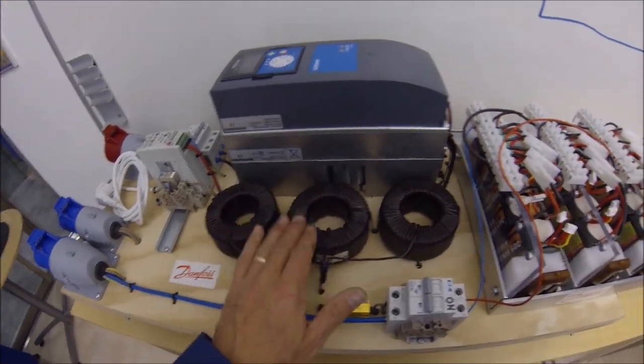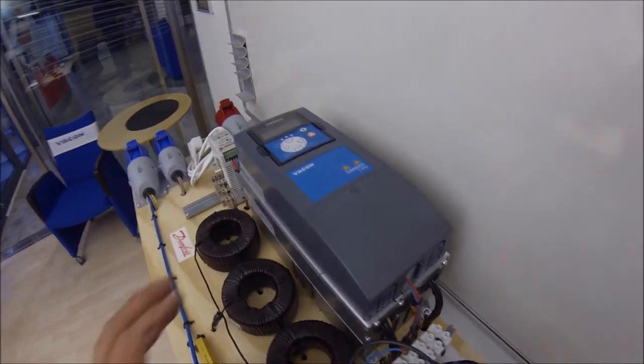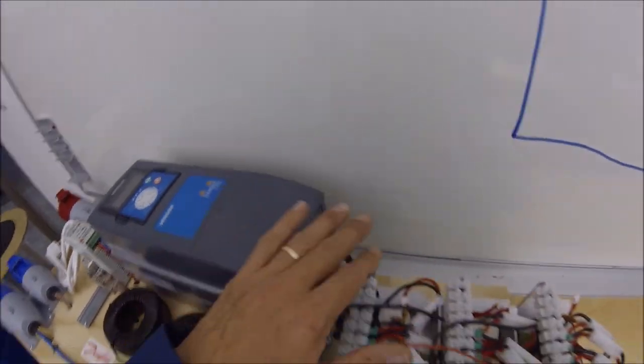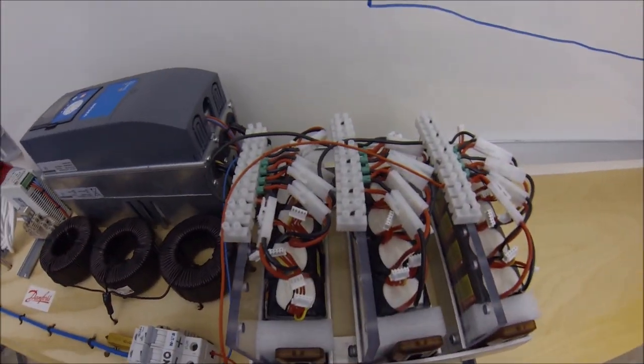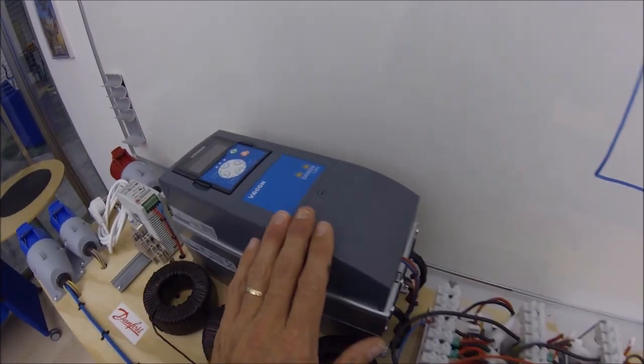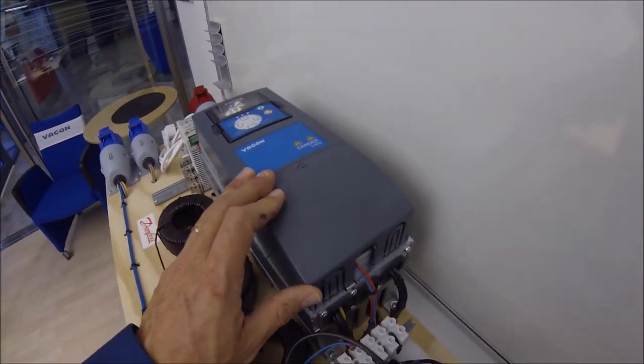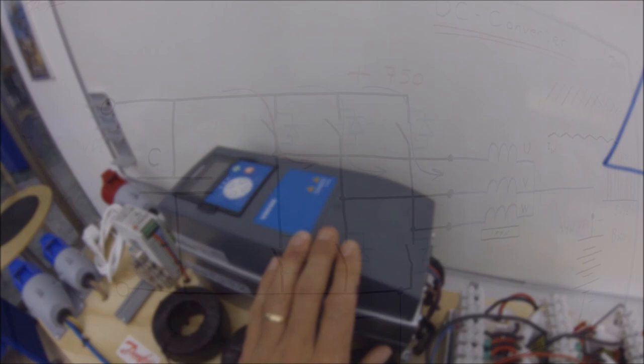Now that we have connected the chokes to the motor cable side, how can the frequency converter produce a DC voltage to a battery? This thing is designed originally for making AC voltage to a motor.